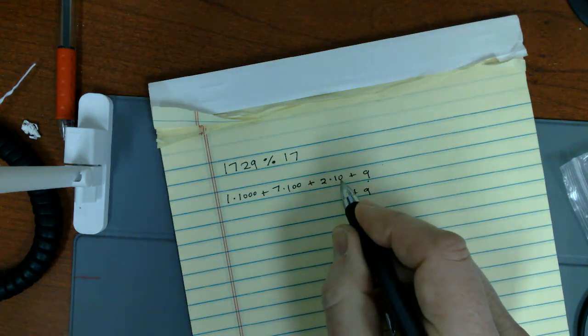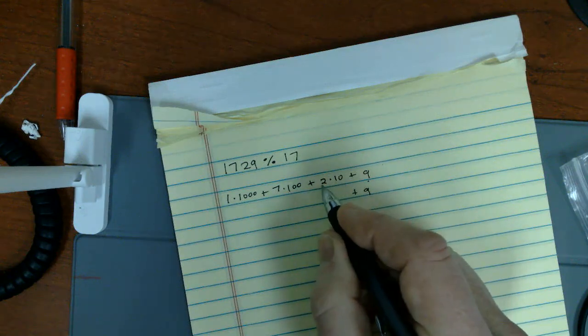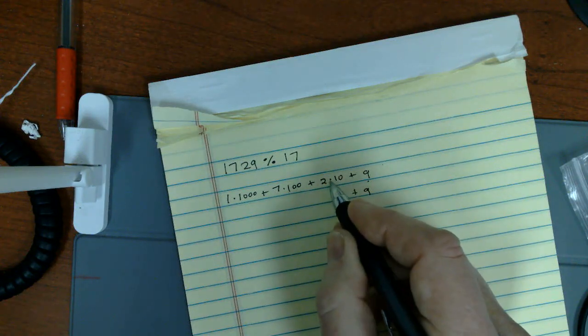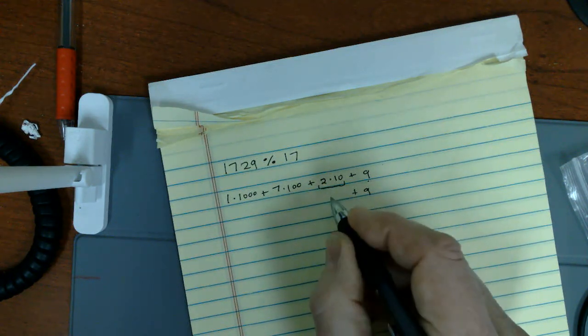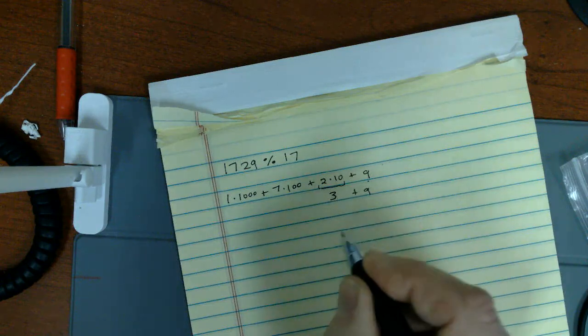And 10 mod 17 is the same thing. So this is two, it's easier just to take the 2 times 10. And this is 20, 20 mod 17 is 3.